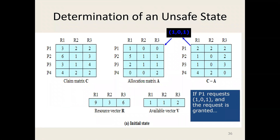We will do a small change: taking 1, 0, 1 from the allocation matrix and P1 will request 2, 2, 2. Now what is the situation of available resources and whether we can satisfy any process? The available vector is now 0, 1, 1. P1 requires 2, 2, 2 — we cannot allocate because P1 cannot be satisfied.